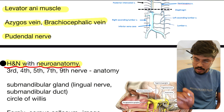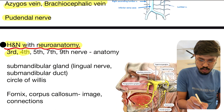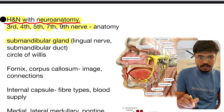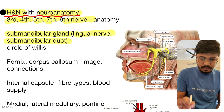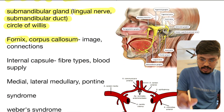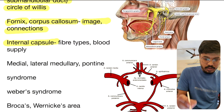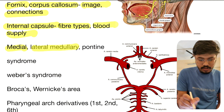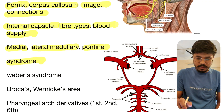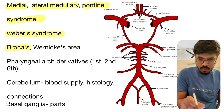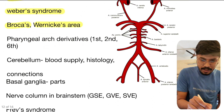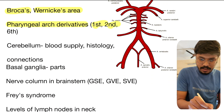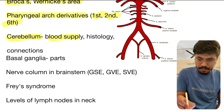From head, neck, and neuroanatomy: third, fourth, fifth, seventh, and ninth cranial nerves — you have to read all the details. Submandibular gland, especially lingual nerve and submandibular duct. Circle of Willis, fornix, corpus callosum — image and connections. Internal capsule fiber types and blood supply. Medial and lateral medullary syndrome, medial and lateral pontine syndrome are extremely important. Weber syndrome, Broca's area, and Wernicke's area are extremely important.